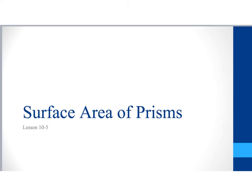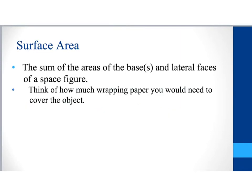Hello and welcome to the last section that we are going to cover this year. This is lesson 10-5 and we're going to be looking at the surface area of prisms and cylinders. By definition, the surface area is the sum of the areas of the bases and lateral faces of a space figure — essentially adding up all of the areas of the sides, faces, and bases that make up an object.